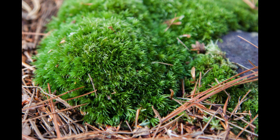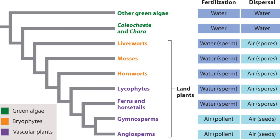This semester I've been TFing a class called Foundations of Biological Diversity. One of the topics we cover is how life cycles of the earliest plants started to adapt to life on land. Mosses that exist today are great examples of intermediate strategies between the earliest plants that evolved in the water and the land plants that dominate today's landscape.